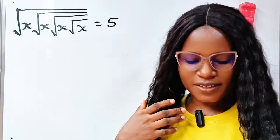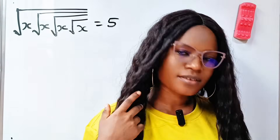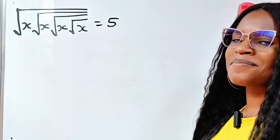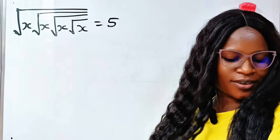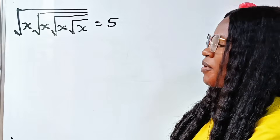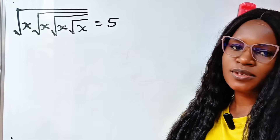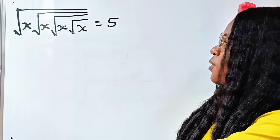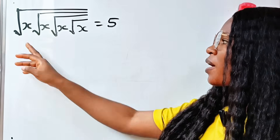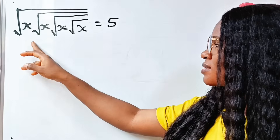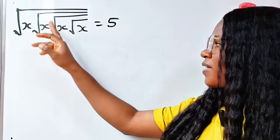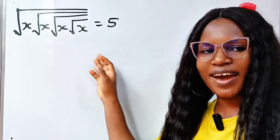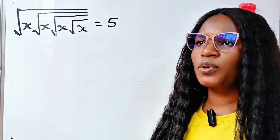Hello, let's solve this using two methods. Welcome back to my channel. Today we have an amazing square root problem to solve. We are asked to solve for x if square root of x, square root of x, square root of x, square root of x equals 5.